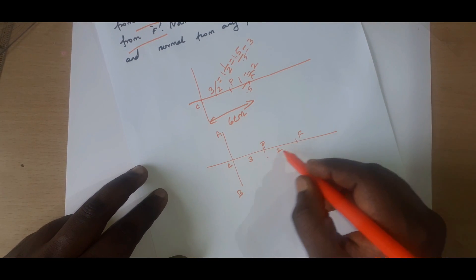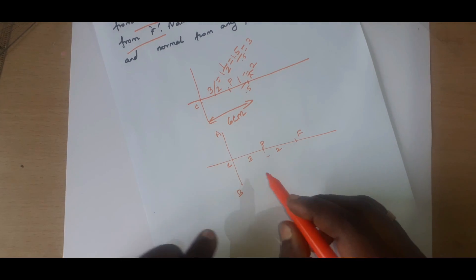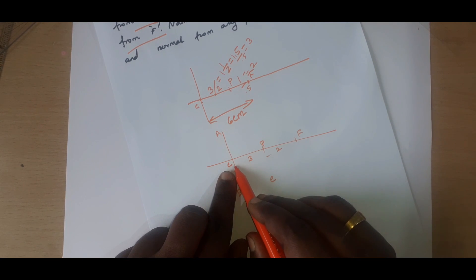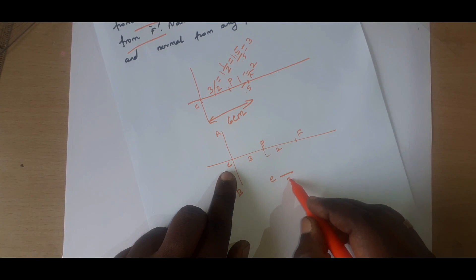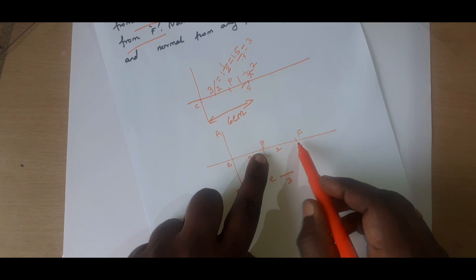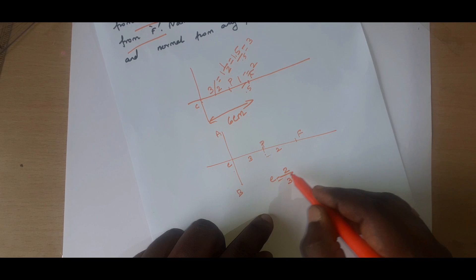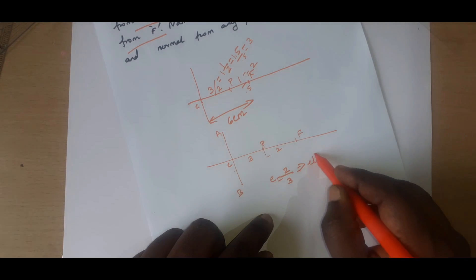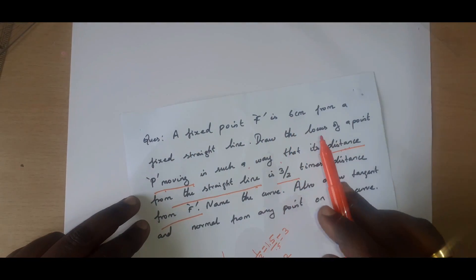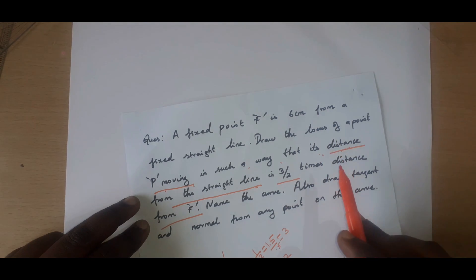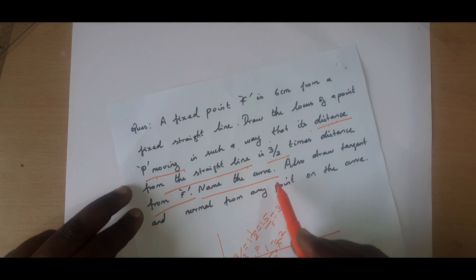According to our eccentricity formula, the distance between the straight line and the moving point goes in the denominator, and the distance from the moving point to the focus goes in the numerator. So this automatically comes under ellipse. But in the question they have not given whether it is ellipse, hyperbola, or parabola — they are simply asking to name the curve.